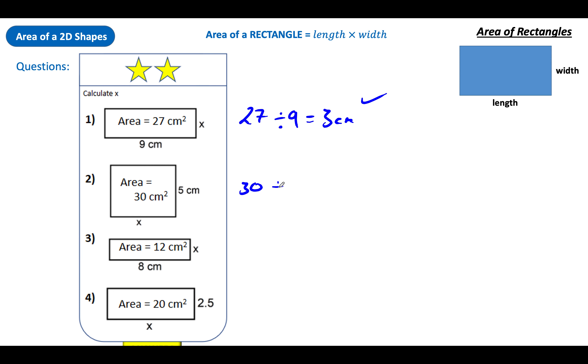27 centimetres squared is the area, one side is 9. Divide the area by the side, I'm left with what the other side must be. In this case it must be 3 centimetres. This time the area is 30, divide it by the side that I know, which is 5. The missing side must be 6 centimetres. The area is 12, divide it by the side you know, which is 1.5 centimetres. Lastly, 20 is the area divided by the side you know, you must be left with the one that you don't know. So 20 divided by 2.5 is 8 centimetres. Well done.